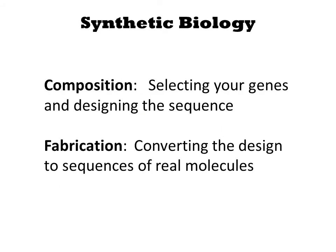Thus, there are two decisions you must make about a genetic engineering experiment. First, you must decide what genes you wish to put together, and thus the design of the composition of the engineered cell. Subsequently, you must fabricate a DNA with that sequence and insert it into a bacterium.